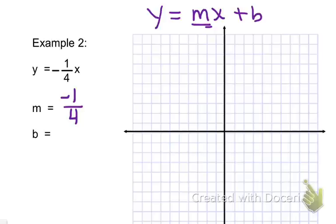Now, b. Remember b is always the number with no variable attached to it, and it's always after our x. However, there is no number after the x. There is no number that doesn't have a variable attached to it. That means our b is 0. So when we go to graph, 0 is our starting point on the y-axis. That means our starting point is right here on the origin.